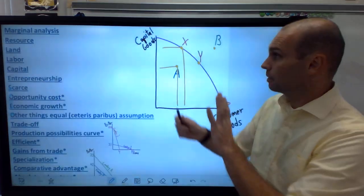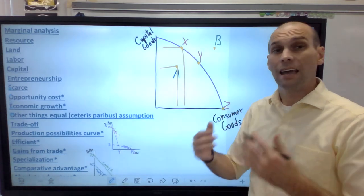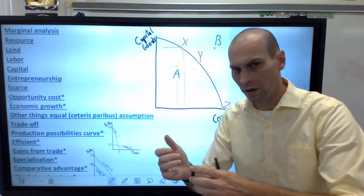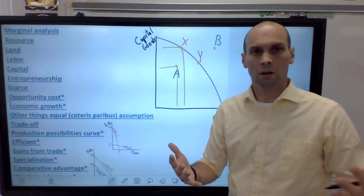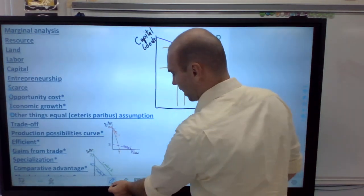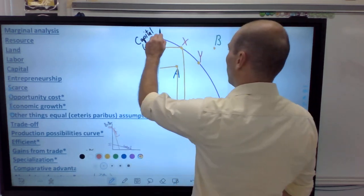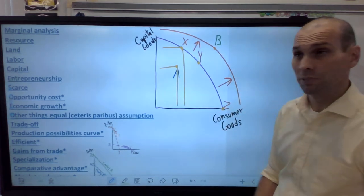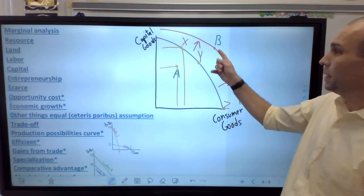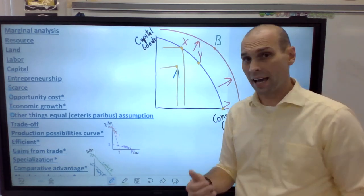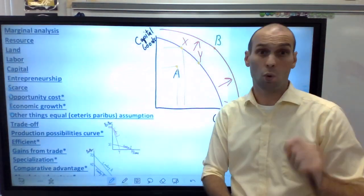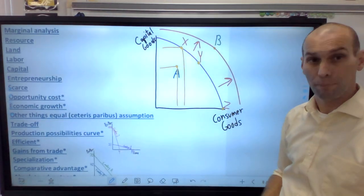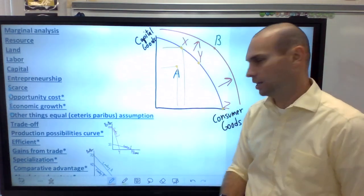But just to complicate things, what if somehow we did get to point B? What that would mean is we had to change something. We had to have more resources, land, labor, capital, human capital, which is that thing that improves labor. So human capital is when you get educated, more skilled, more experienced, and labor becomes more productive. It's a pretty cool thing. But what we have there at point B is if we added human capital, so I educated all my workers or they're more skilled or experienced, then they'd be more productive and this curve would actually start to grow outward.